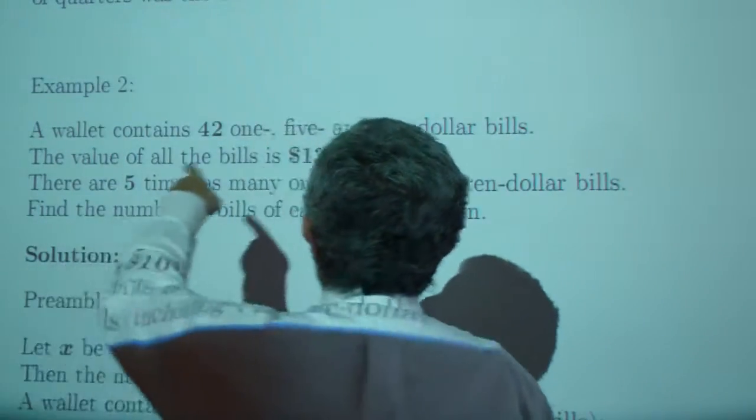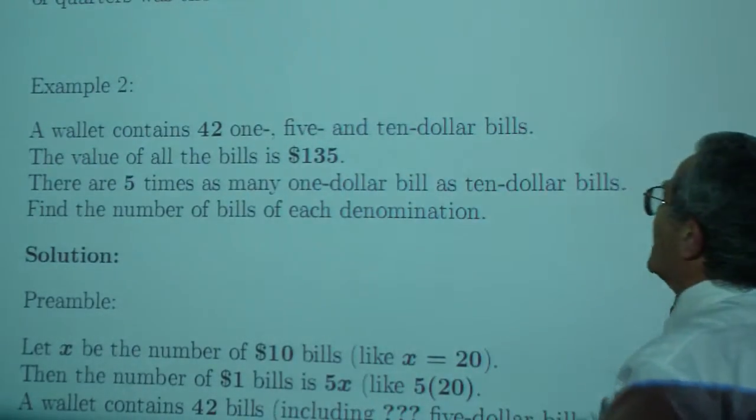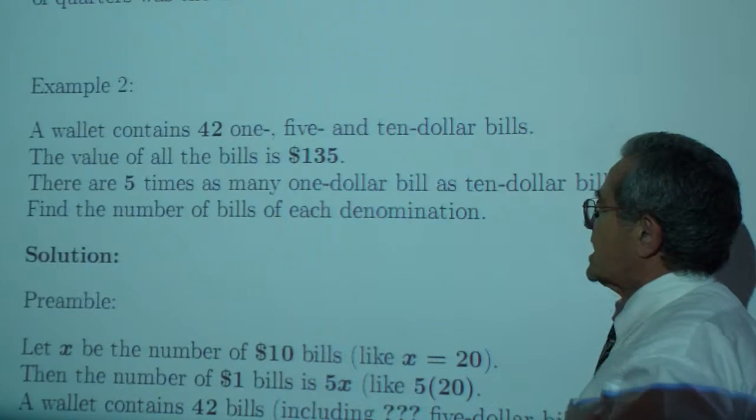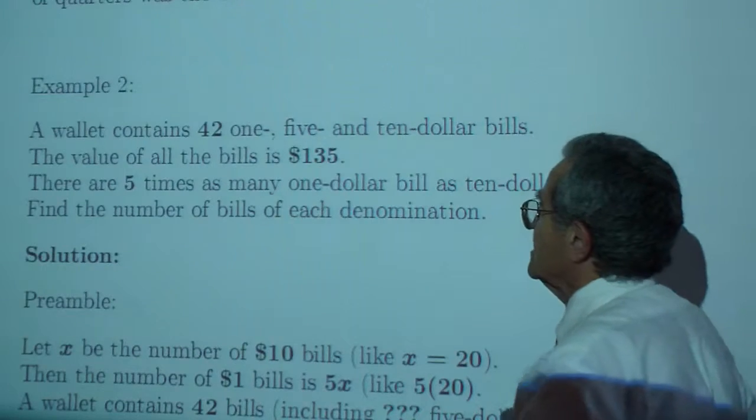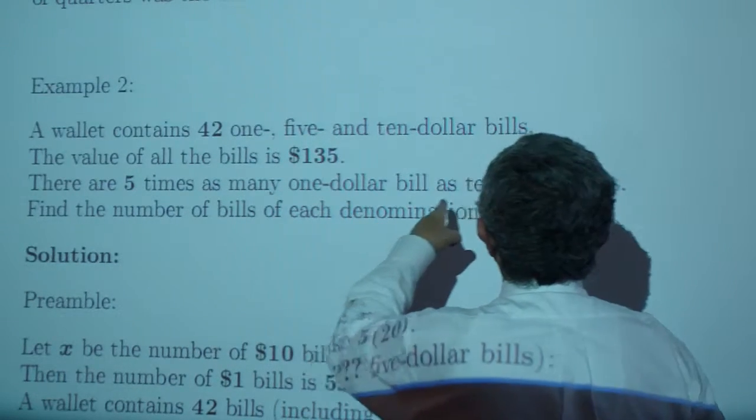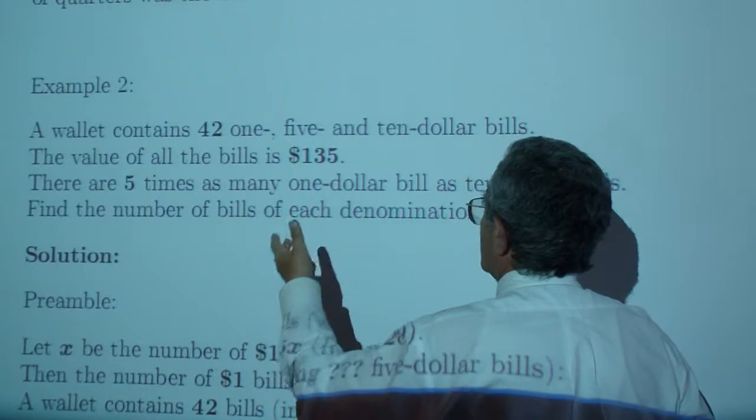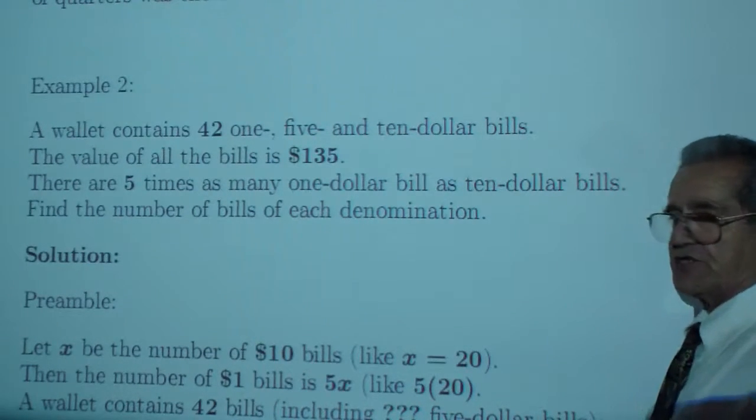Example 2. A wallet contains 42 $1, $5, and $10 bills. The value of all the bills is $135. There are 5 times as many $1 bills as $10 bills, and you want to find the number of bills of each denomination.